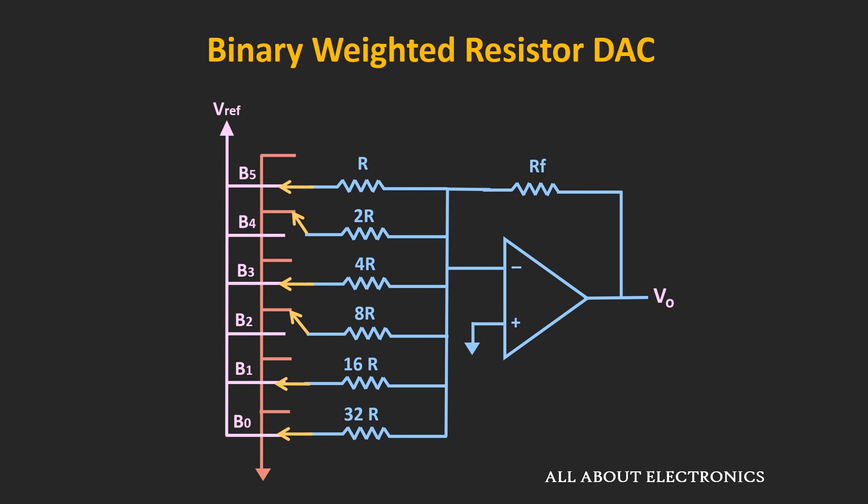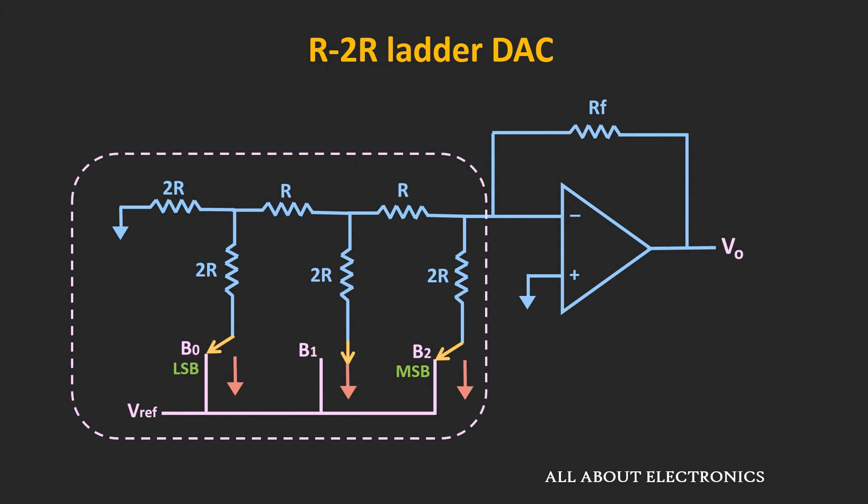This problem can be solved to quite an extent by using the second type of DAC, which is known as the R2R ladder type of DAC. As you can see, this type of DAC uses a resistive ladder network, and this ladder network contains only two types of resistors.